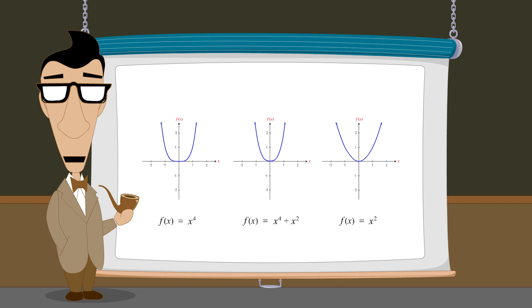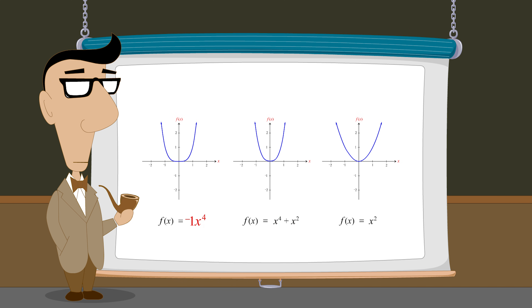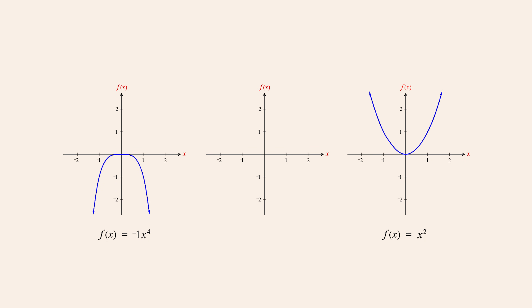But let's see what happens if we change the coefficient of x to the fourth power to negative one. When we add these two monomials, we get the polynomial function negative x to the fourth power plus x-squared, producing a more interesting graph. Even though both monomial functions intersect the x-axis at a single point, the polynomial function intersects the x-axis at three points.